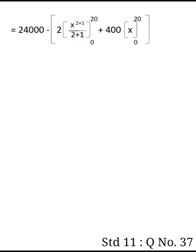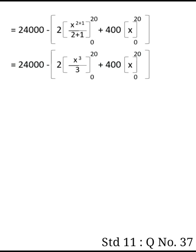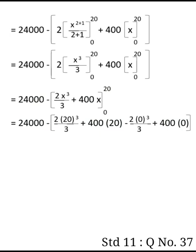The integral is x power plus one divided by n plus one. So we get 24,000 minus, and evaluating the integral: 2 times x cubed divided by 3 plus 400x, evaluated from 0 to 20. Using upper limit minus lower limit: 2 times 20 cubed divided by 3 plus 400 times 20 minus 0. That's 2 times 8000 divided by 3 plus 8000.